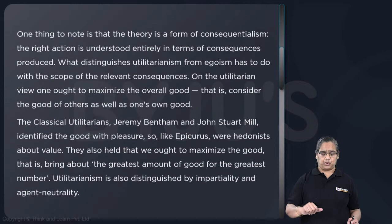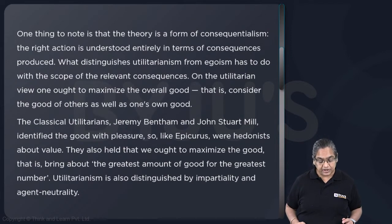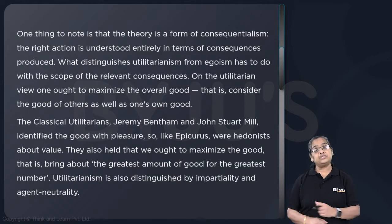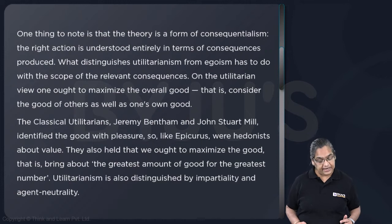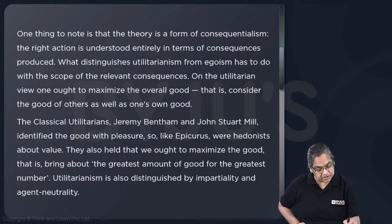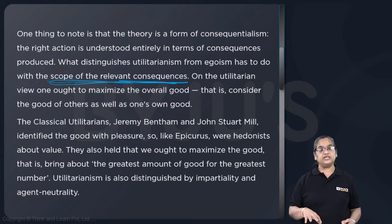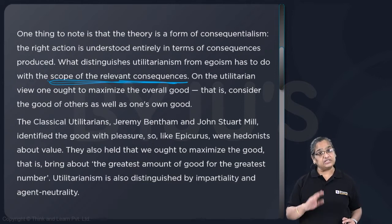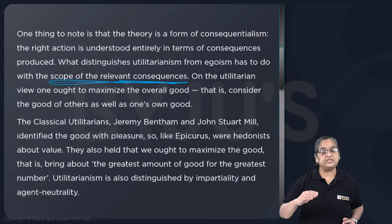That is the most important line of that paragraph. One thing to note is that the theory is a form of consequentialism — the right action is understood entirely in terms of consequences. When do you say an action is correct? On the basis of its consequences. And what distinguishes utilitarianism from egoism has to do with the scope of the relevant consequences. In utilitarianism, right action is action that produces the maximum good.